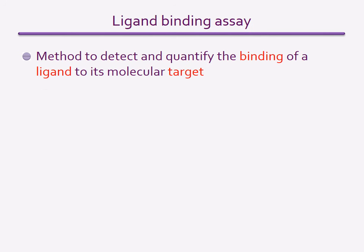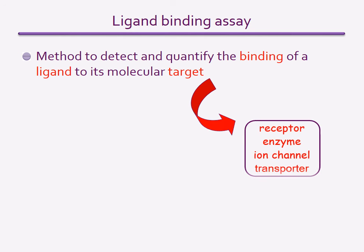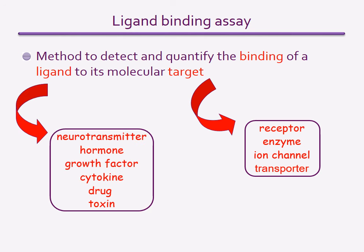A simple and widely used assay in early drug discovery is the ligand binding assay. It is a method to detect the binding of a ligand or an unknown compound to a drug target. The drug target is a protein, usually a receptor or an ion channel, and the ligand can be any molecule investigated for its ability to bind to the target.